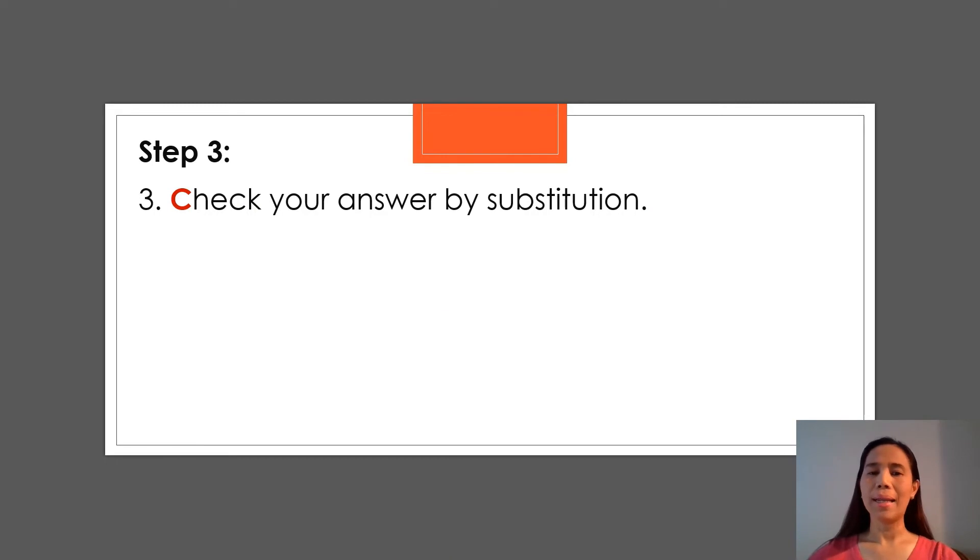And the third, let's check our answer by substitution. So copying the original equation, which is 54b + 2 = 164. Since we said a while ago, b = 3. So we just change the b into 3, putting this parenthesis. Because parenthesis means multiplication as well. So it's a symbol of multiplication. So we could just put the parenthesis.